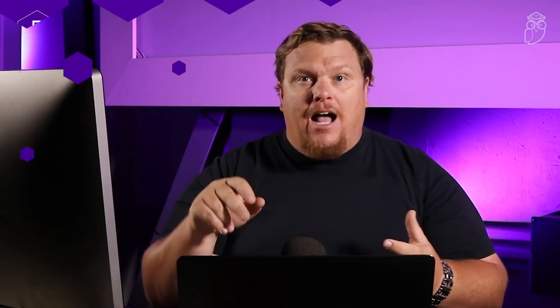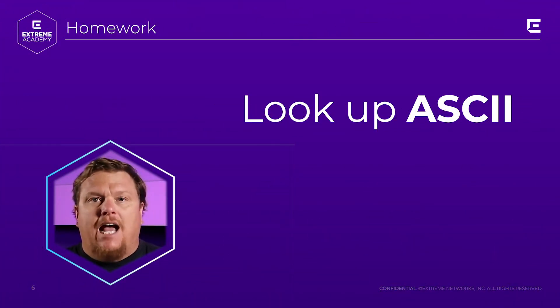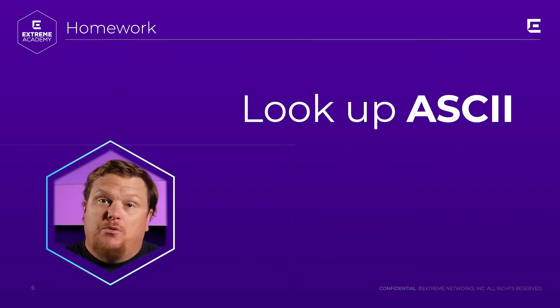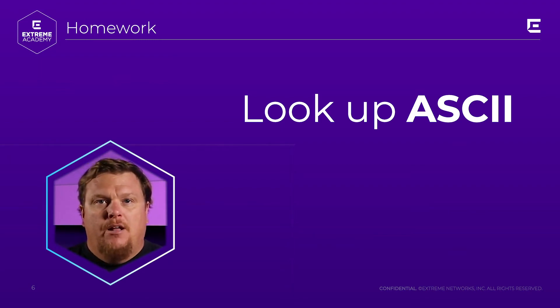A little bit of homework for you: look up ASCII characters. The first set of them — there are 256 of them — they're the 256 uppercase, lowercase numbers, and symbols. There's also a standardized version where, for example, a binary sequence like 1 0 1 0 that adds up to 160 equals something on your keyboard. You can look that up and say, oh, that's the letter H or whatever it is.